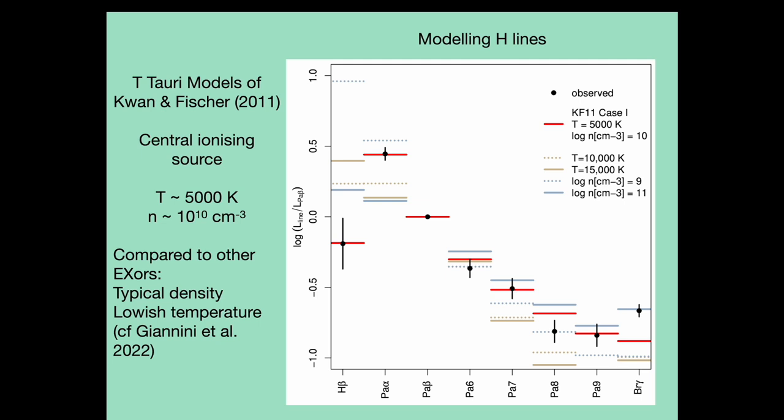We can be quite a bit more quantitative with the hydrogen lines. Quan and Fischer provide models for hydrogen line ratios for accreting young stars with a central ionizing source. Applying their models suggests a temperature of around 5000 Kelvin and a density of 10^10 atoms per cubic centimeter. The density is fairly typical for EXOR outbursts when compared to a similar study by Giannini et al. The temperature is a bit on the cool side but not too unprecedented. These properties apply to diffuse gas producing the emission lines.